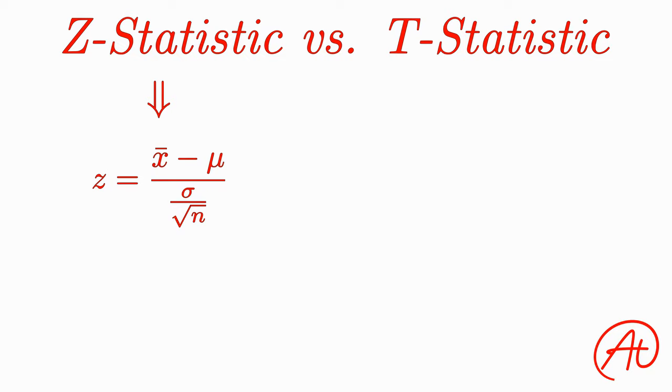The sample size n, and most importantly, the population standard deviation sigma. If you have all those values, you can be confident in using a normal distribution that looks like this.